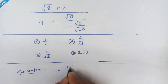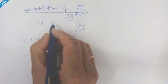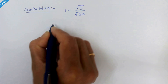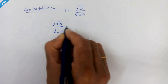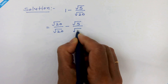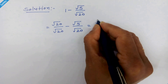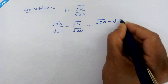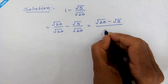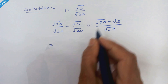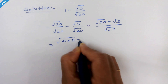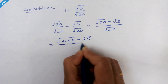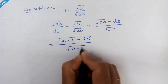1 minus square root of 5 upon square root of 20. Here we can take LCM. So it will be square root of 20 upon square root of 20 minus square root of 5 upon square root of 20. So it will be square root of 20 minus square root of 5 upon square root of 20. Square root of 20 can be written as square root of 4 times 5, minus square root of 5 upon square root of 4 times 5.